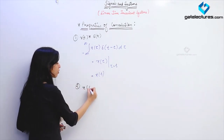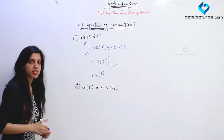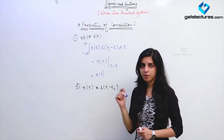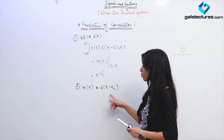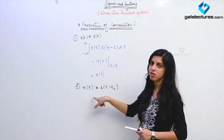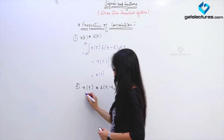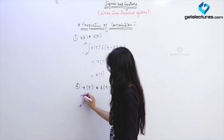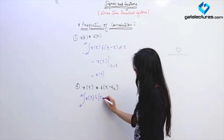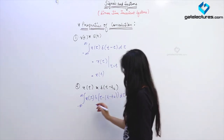Now suppose I convolute the signal with a shifted impulse signal — a shifted impulse signal which occurs at T equal to T₀. We have already looked at this shifting property. The shift is going to occur in the output. The convolution integral becomes ∫X(τ)δ(τ − (T − T₀))dτ.